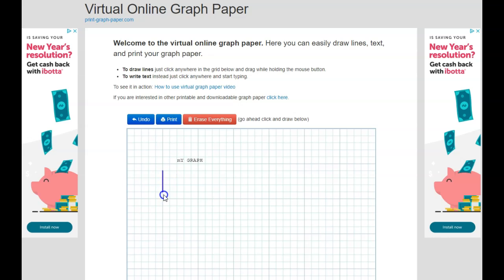Now, if I click and drag, now all of a sudden I'm making a little line. Right. So I could set up my X and my Y axes by making my lines. I could label things.